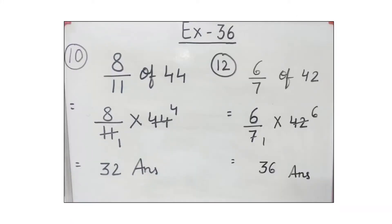Question: 8 by 11 of 44. You know very well what is the meaning of OF - Multiply. We will write multiply in place of OF. 8 by 11 multiply 44.